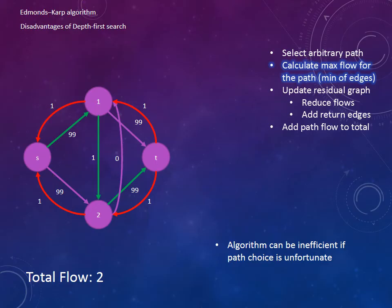Calculate the max flow of that path, we've got 1 again. Update the residual flows. Now we have gone from 100 to 98, and update the return edges to 2. Add 1 to the total flow. Start the process again selecting another arbitrary path. Calculate the max flow of that path. Update the residual graph with the reduced flows, add the return edges, and update the total flow to 4. Again selecting an arbitrary path, calculate the max flow, update the residual flows, add the return edges, and update the total flow to 5.